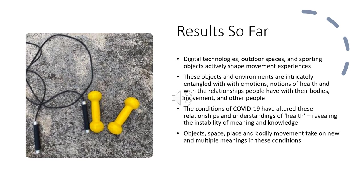Results have also demonstrated how these objects and environments — spaces and places, bodies and things — are intricately entangled with each other and also with emotions and affects. Through people's stories in their digital photo diaries, the relationships that people have with their own bodies, with physical activity itself, and with other people in their lives are emerging as really prominent themes.